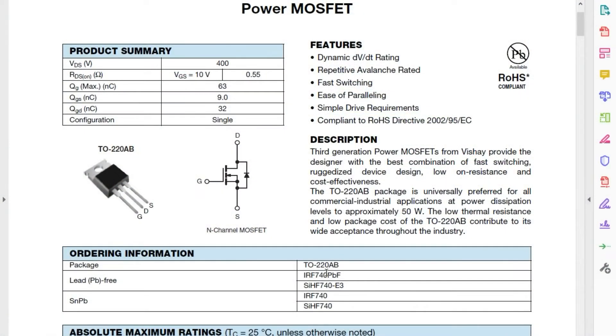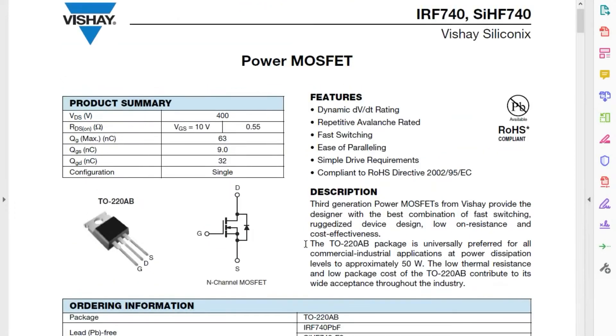So here we have the data sheet for the IRF740 N-channel power MOSFET. Let's have a quick look at some of the overall ratings for it. VDS drain source voltage 400 volts. That's a lot of voltage. It takes to turn it on. RDS on and it shows its resistance while on.